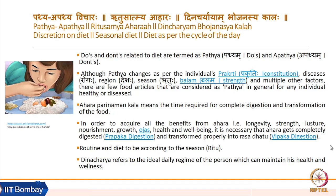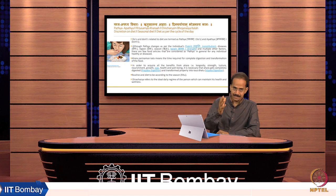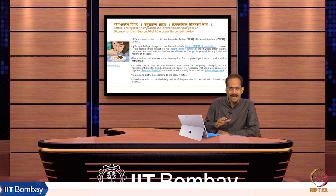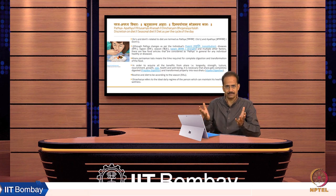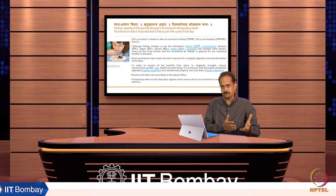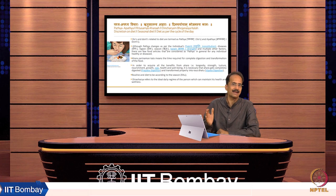Do's and don'ts related to diet are termed as pathya and apathya. Pathya changes as per the individual's prakriti — that is nature or constitution — disease, region, season, and the strength of the person among multiple other factors. There are few food articles considered as pathya in general for any individual, healthy or diseased. A very popular food in India is khichdi, prepared differently across regions, but it is a universal food.